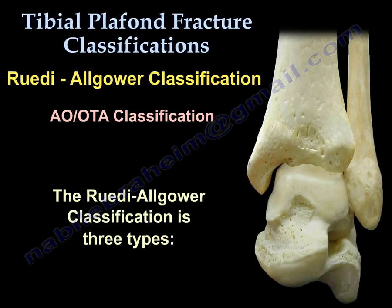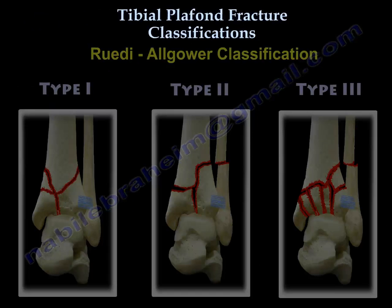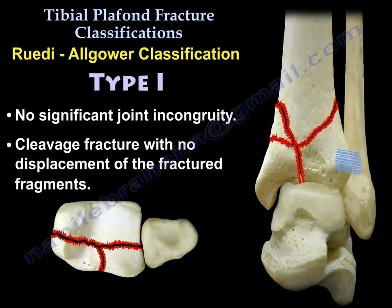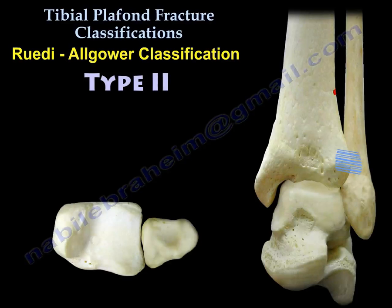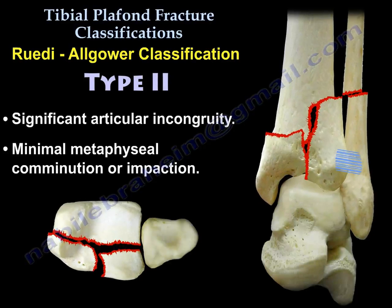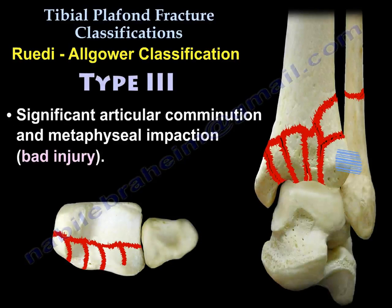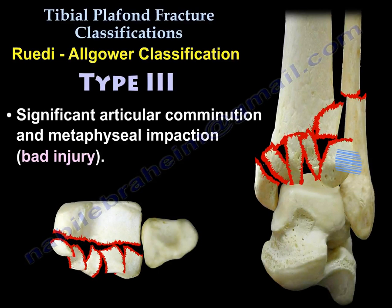The Ruedi-Allgöwer classification has three types. Type 1: no significant joint incongruity; there is a cleavage fracture with no displacement of the fractured fragments. Type 2: significant articular incongruity with minimal metaphyseal comminution or impaction. Type 3: there is significant articular comminution and metaphyseal impaction.